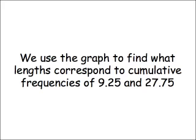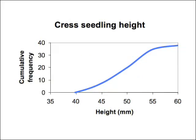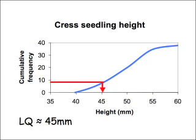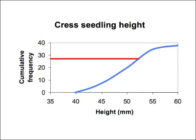So to recap, we use the graph to find what heights of the seedlings correspond to cumulative frequencies of 9.25 and 27.75. To find the lower quartile, draw a line across from 9.25 until it meets the curve and drop a line down to the x-axis — I make it to be 45mm more or less. In the same way, to find the upper quartile, draw a line across from 27.75 on the cumulative frequency axis until it meets the curve, and drop a line down — I make that to be 52mm.